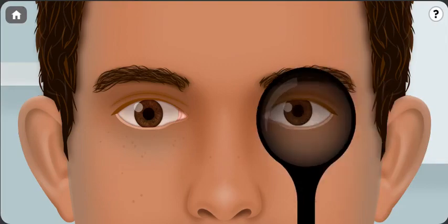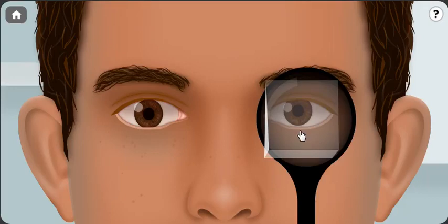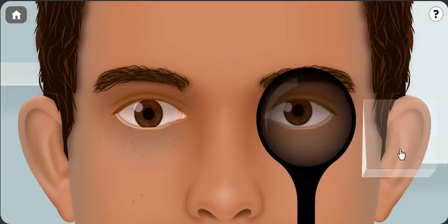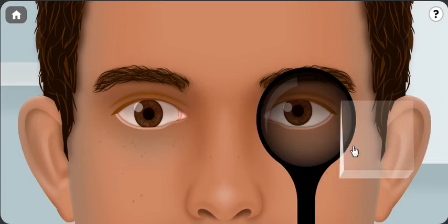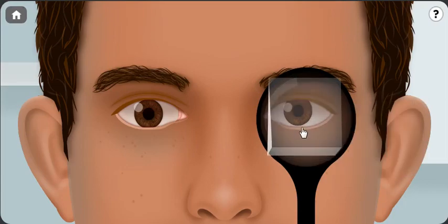So in order to examine this patient, we need a prism. We have to put the prism and the cover at the same eye since this type of squint doesn't obey Hering's law.